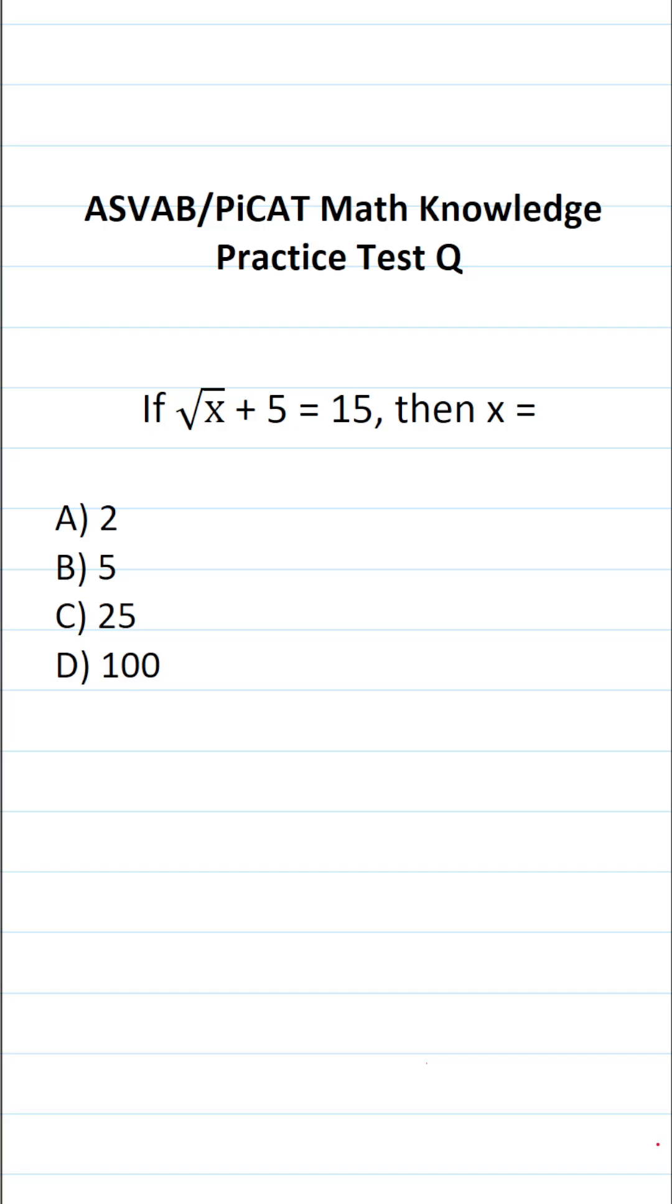So again, we're going to be solving this equation for x. That is to say, we want to get x equal to something by itself. And since you're not permitted to use a reference sheet or a calculator on the ASVAB or PyCat, you want to get in the habit of copying things down and working them out on your own scratch paper.